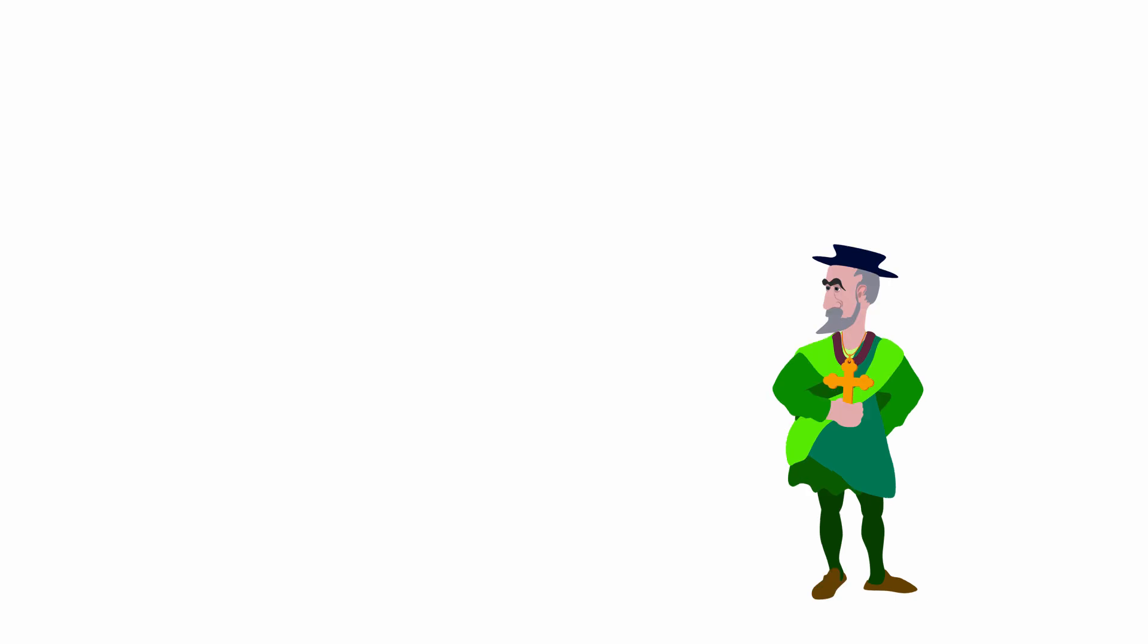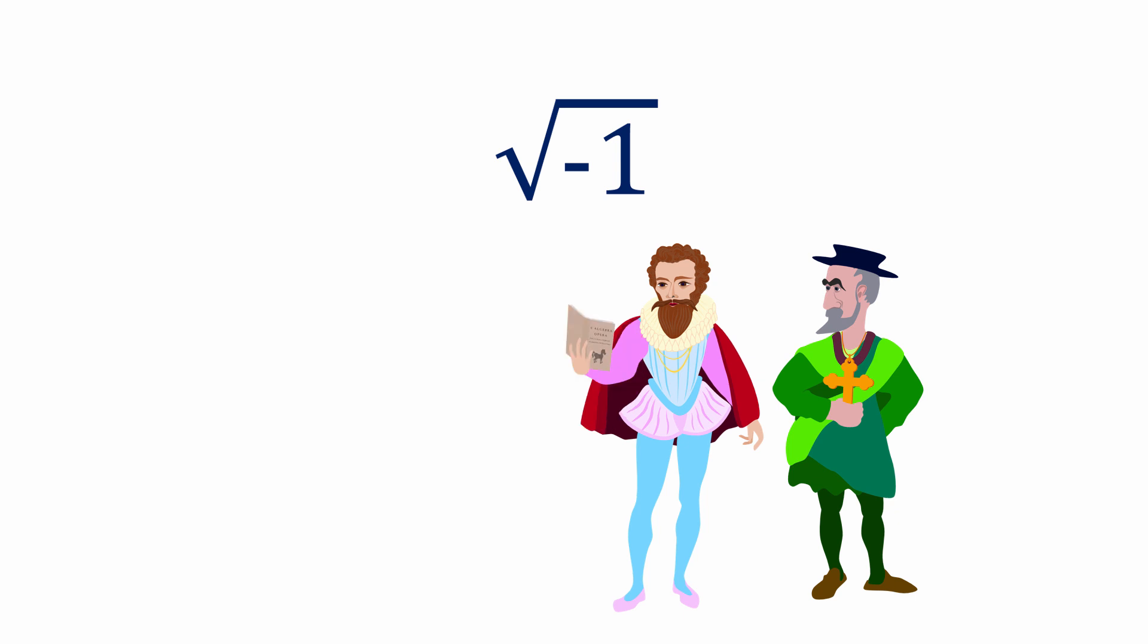A few years later, in 1574, another Italian, Raphael Bombelli, published a book entitled Algebra. His aim was to explain the rules of algebra in simple terms that almost anyone could understand. He spelled out detailed rules for doing algebra with the special value that Cardano had discovered. Bombelli was declared a master of the analytical art by some of the most revered mathematicians of the day.